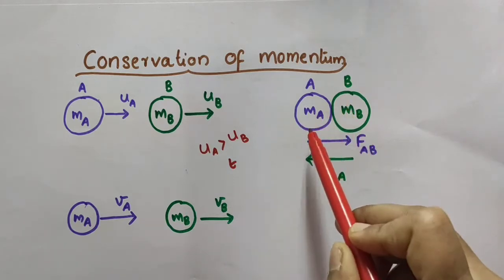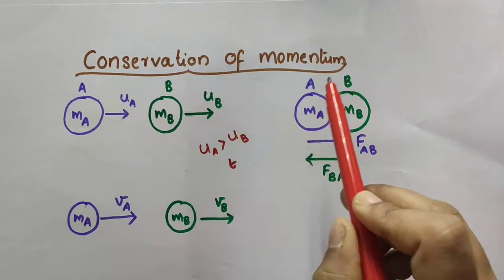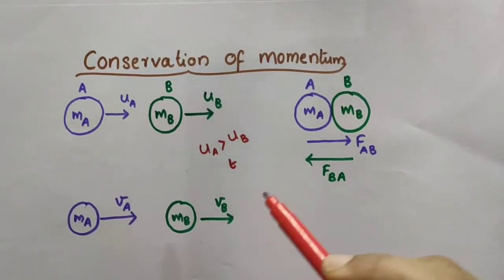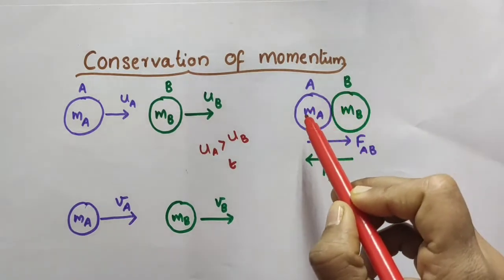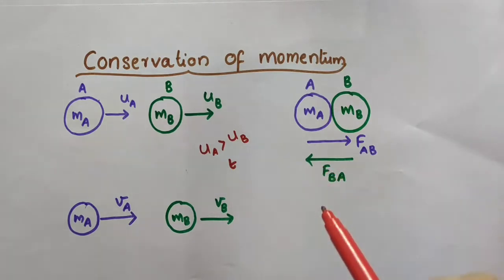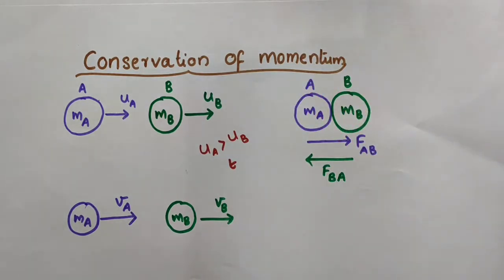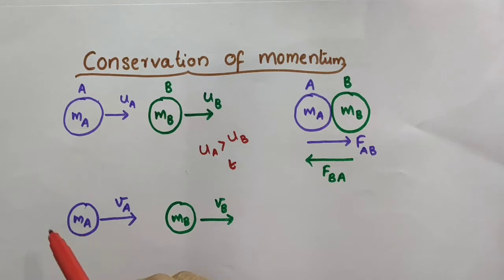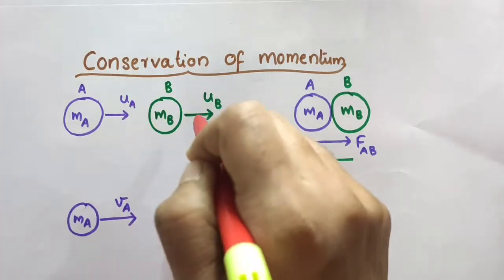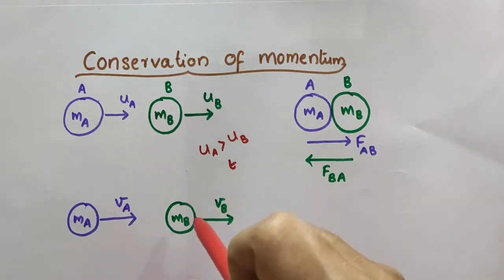Let the force exerted by ball A on B be FAB, shown acting in this direction. Let the force exerted by ball B on ball A be FBA, acting in the opposite direction. After the collision, their velocities get changed. Let VA be the velocity of ball A after the collision and VB be the velocity of ball B after the collision. So initially they were moving with velocities UA and UB respectively, but after the collision they move with VA and VB respectively.